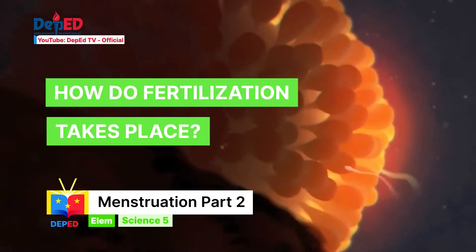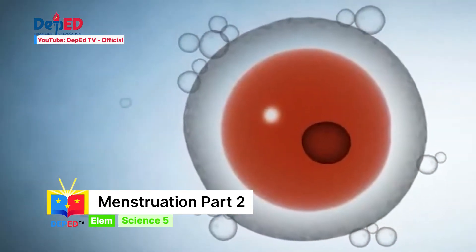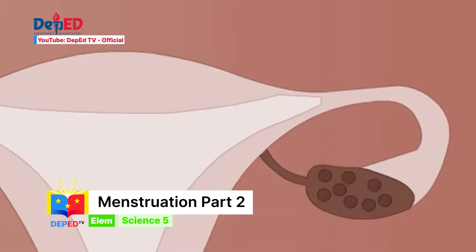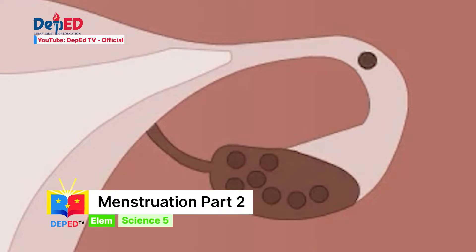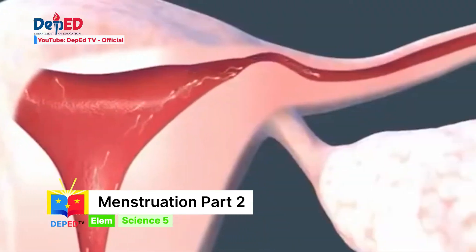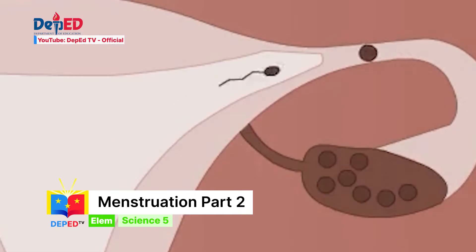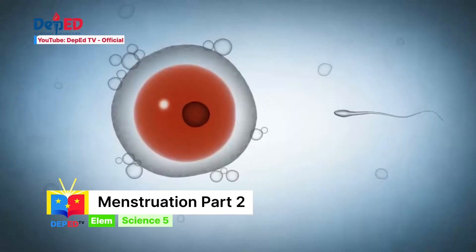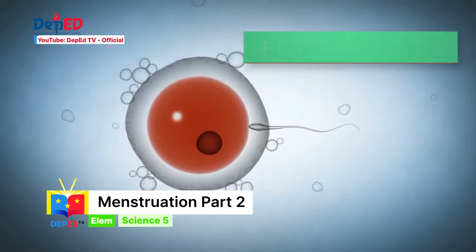How does fertilization take place? Once a month, the ovals mature and exit out of the ovary. These eggs go into the fallopian tube and stay there for a while. When sperm coming from the testes of a male happens to enter the tube where the egg lies, one sperm may unite with the mature egg.